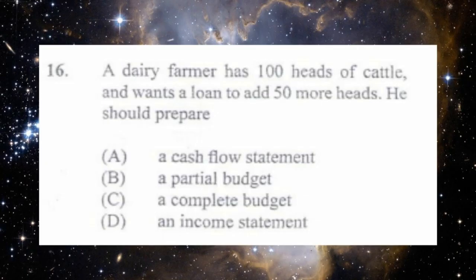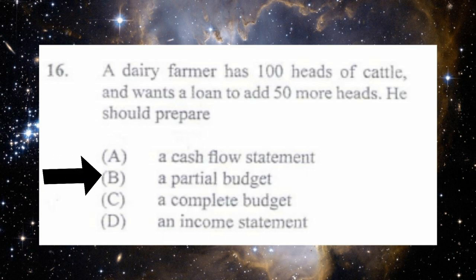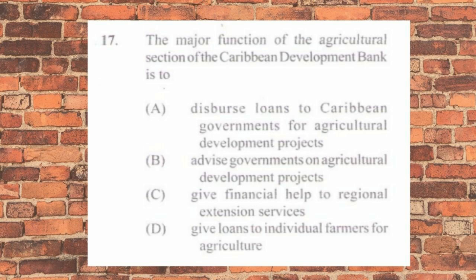Question number sixteen: a dairy farmer has 100 heads of cattle and wants a loan to add 50 more heads. He should prepare a) a cash flow statement, b) a partial budget, c) a complete budget, d) an income statement. The answer is b) a partial budget. Since the farmer already has an established farm and budget, he only needs to budget for the additional 50 cattle, not redo the entire 150.